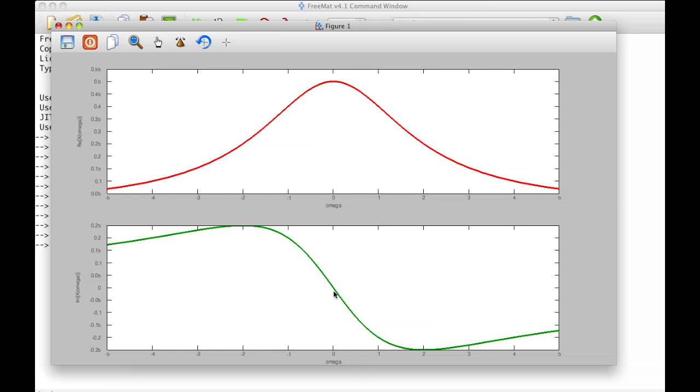The imaginary part as a function of omega is an odd function. It starts out here, goes up to about 0.25, and then goes down to negative 0.25. For any given value of omega, we could treat the corresponding real part and imaginary part as a complex number and get its magnitude. And in fact, that's what we do to get the magnitude as well as the angle plot for this function.